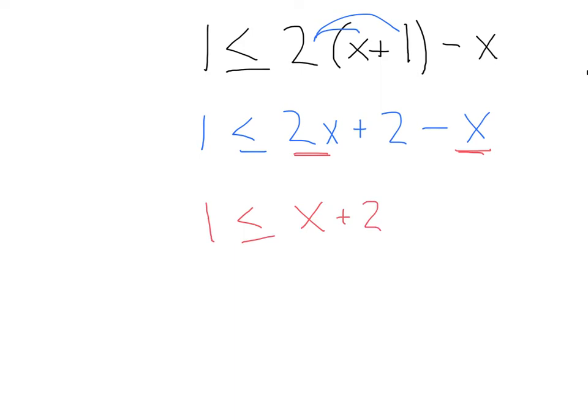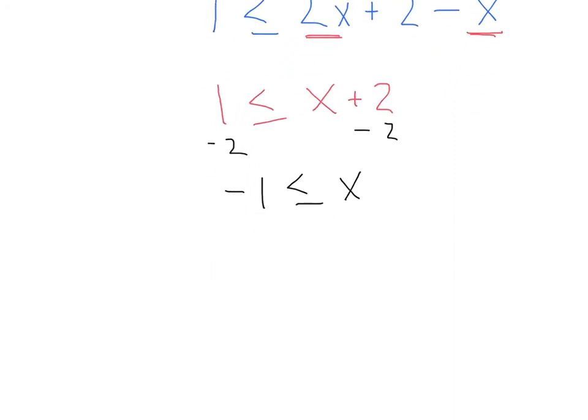From there, we can go ahead and subtract 2 from both sides. That's going to give us negative 1 is less than or equal to x. Now, this is kind of an interesting way to write this. This basically is the same as x is greater than or equal to negative 1. See the big opening towards the x? So while you could circle this and have that as your answer, often people like to write the variable first. So I'm going to go ahead and switch this to x is greater than or equal to negative 1.